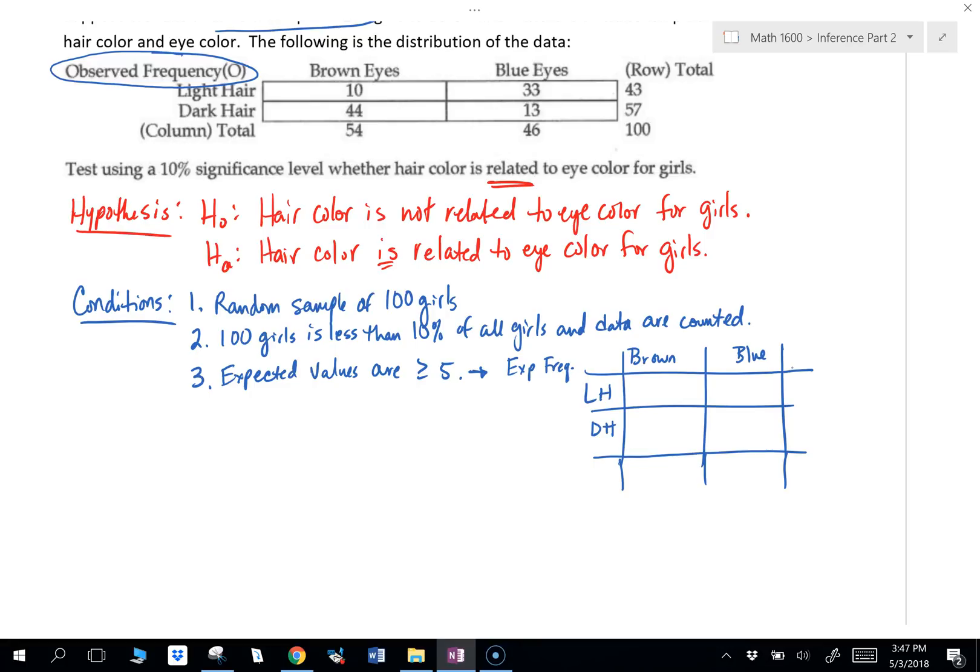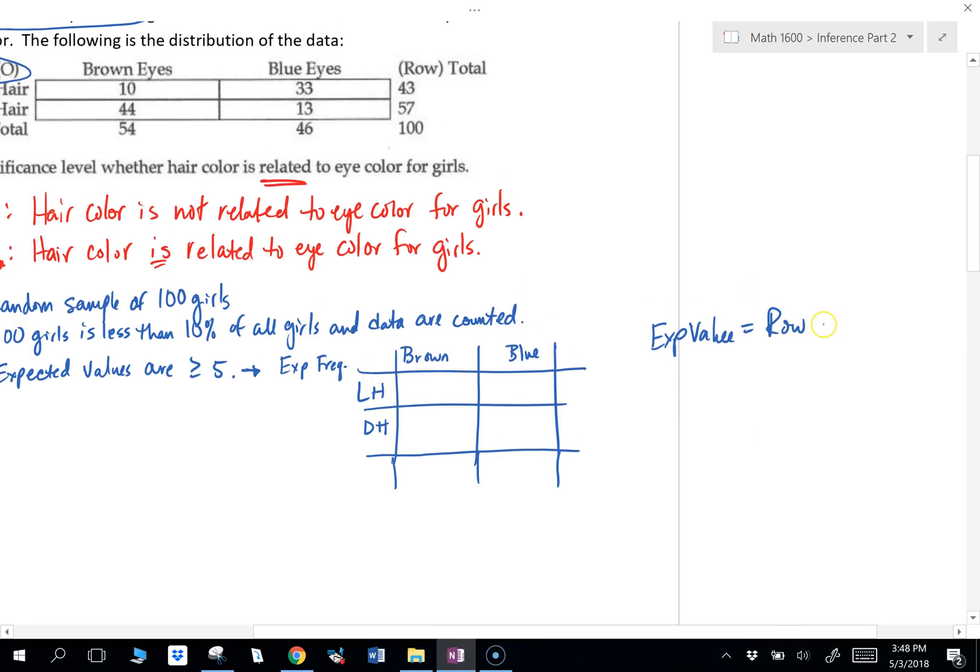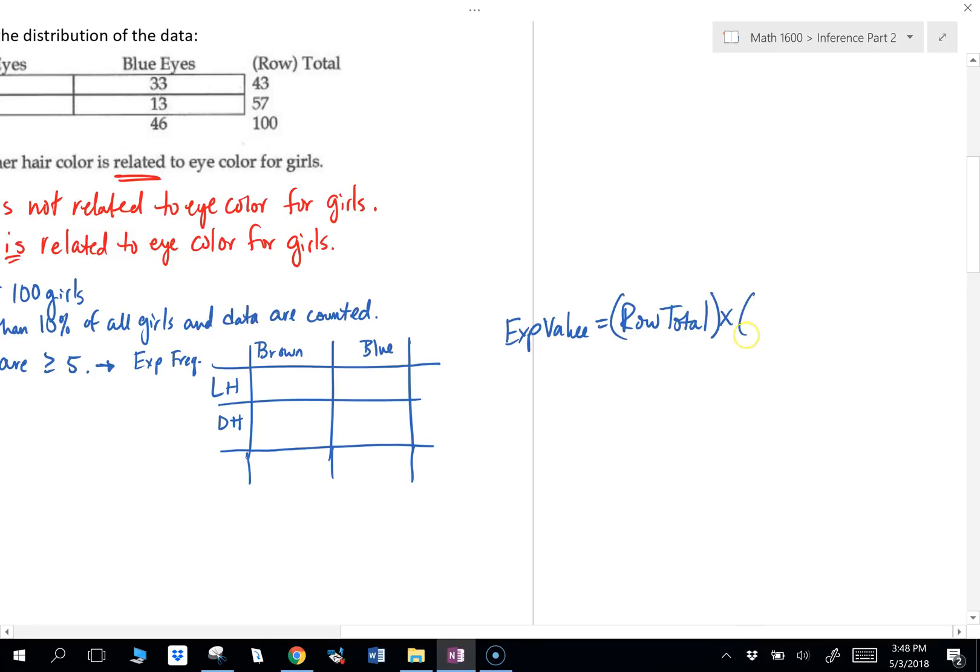Okay. So there's a formula to determine the expected values. Yes. That's just the rule. They have to be bigger than 5. Okay. So the formula for expected value. The expected value or the expected count is the row total times the column total divided by the grand total.